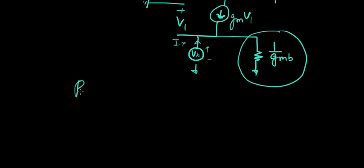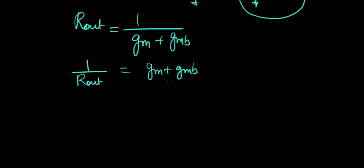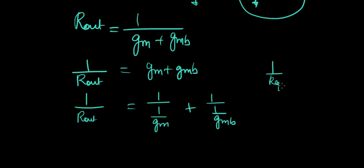Now let's take a look at Rout. Rout was given by 1 over Gm plus Gmb. So now if we play with this equation, let's say we do 1 over Rout equals Gm plus Gmb. And now each of them can be written as this: 1 over 1 over Gm plus 1 over 1 over Gmb. So does this ring a bell? Basically, 1 over Req equals 1 over R1 plus 1 over R2. What is this? This is a parallel connection of two resistances.